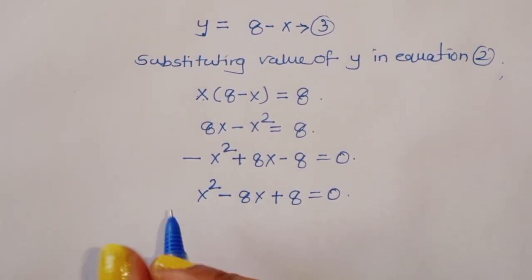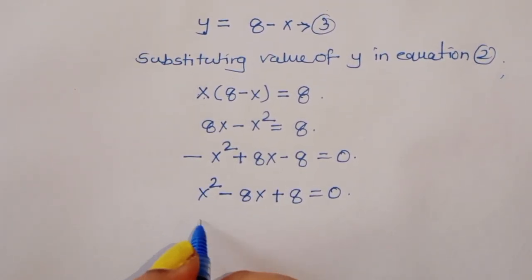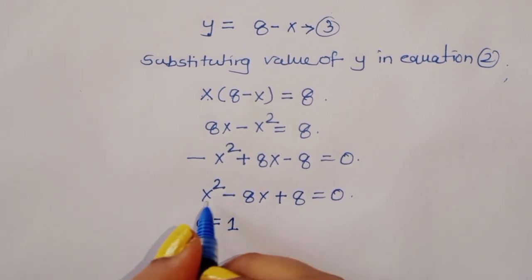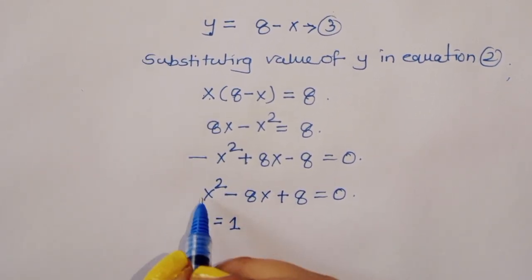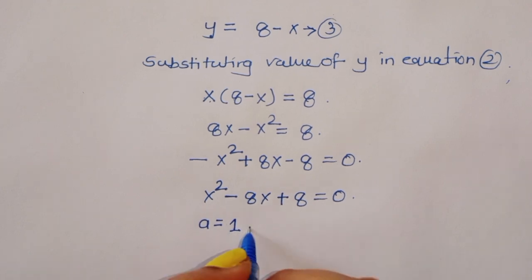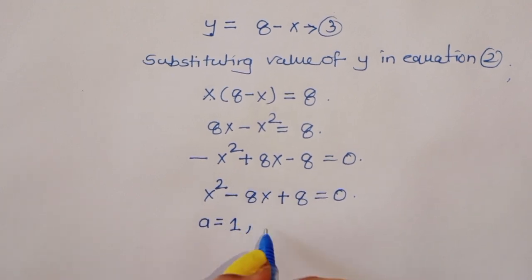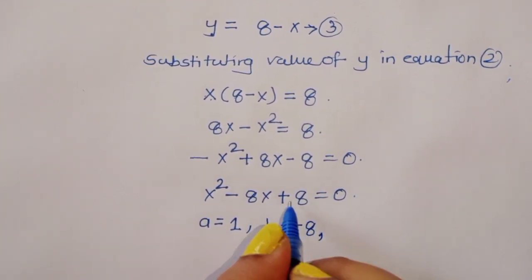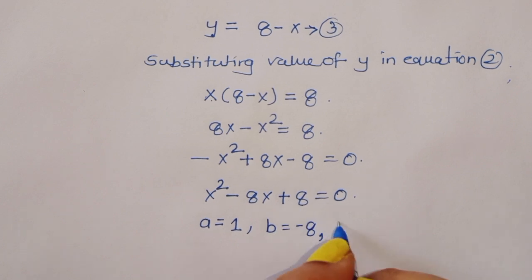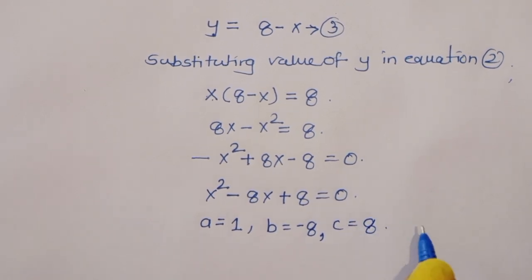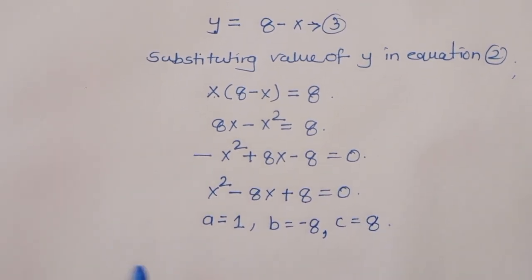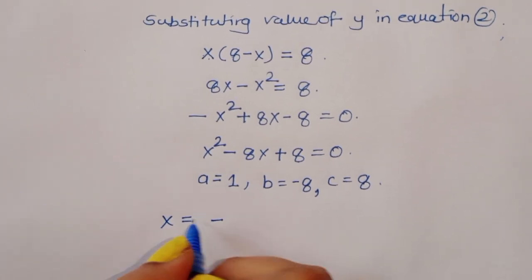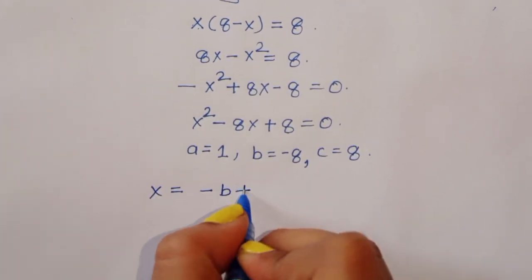Now we identify the coefficients: a, the coefficient of x squared, is equal to 1; b, the coefficient of x, is equal to minus 8; and c is equal to 8. We will use the quadratic formula: x is equal to minus b plus or minus square root of b squared minus 4ac, all divided by 2a.